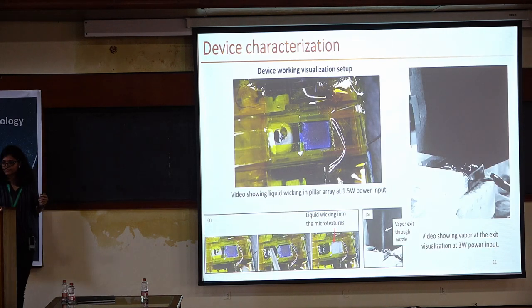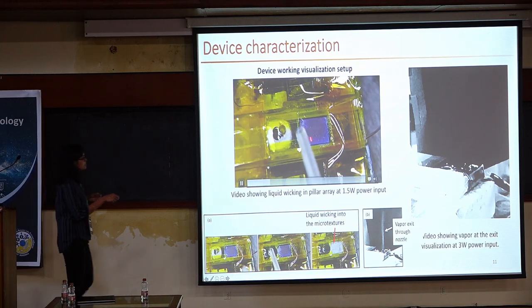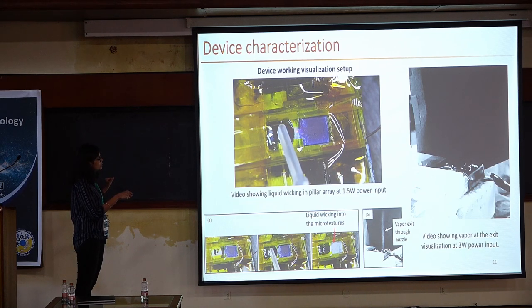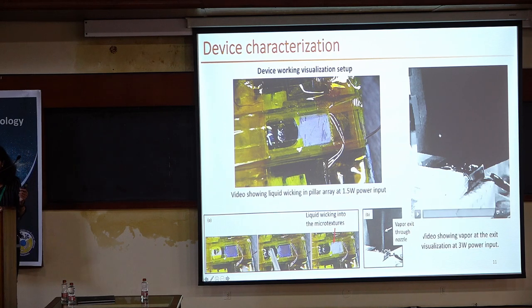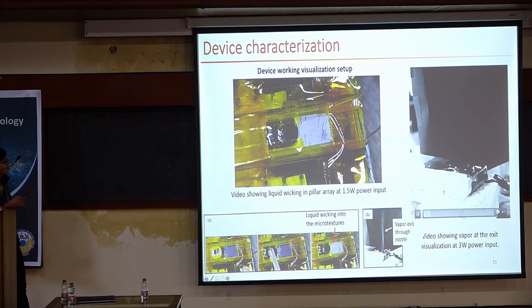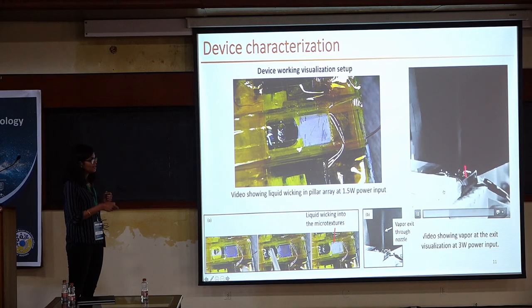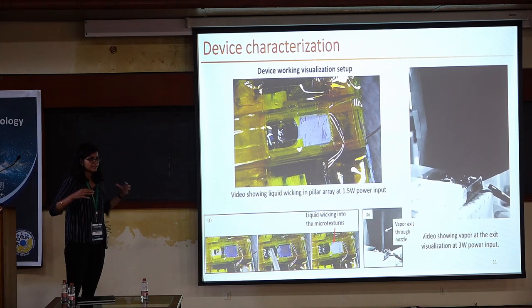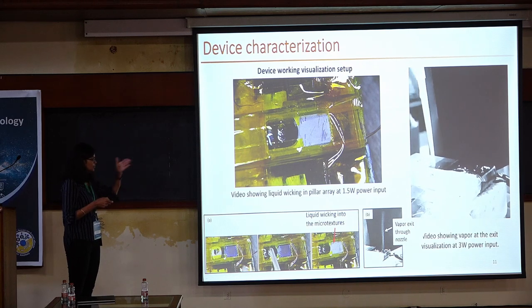These are very preliminary experiments. You can see this is a device with a porous structure. Under ambient lab conditions, when we put water here, the moment it touches the porous structure it immediately wicks in. On application of heating, you will see a plume of vapor coming out. Because of the buoyancy effect in ambient conditions, the plume goes up, but under vacuum conditions the plume will be straight.